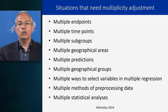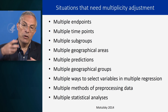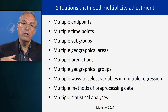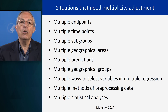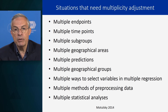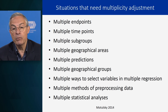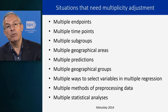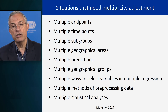So what does it mean to do a multiplicity adjustment? It means you have to adjust the p-value to account for the multiple tests that you have done — basically, you have to raise the p-value you got. Situations that need multiplicity adjustment include: multiple endpoints, multiple timepoints, subgroups, geographical areas, predictions, geographical groups, ways to select variables in multiple regression, methods of pre-processing data, and multiple statistical analyses. All of these are examples where you need multiplicity adjustment.